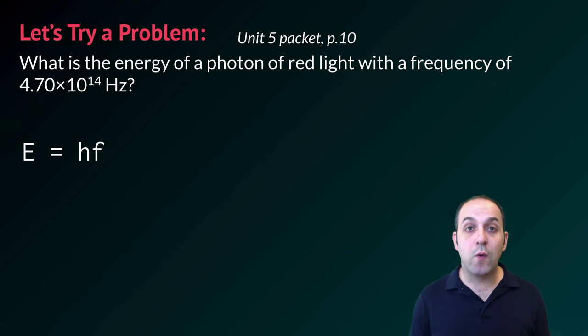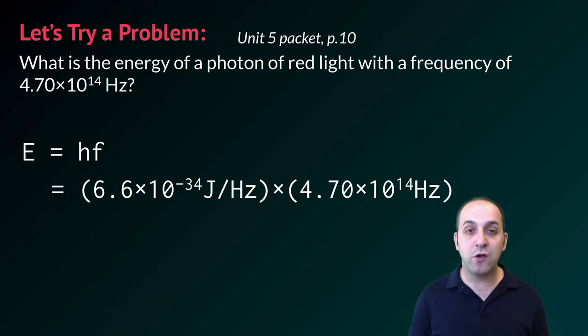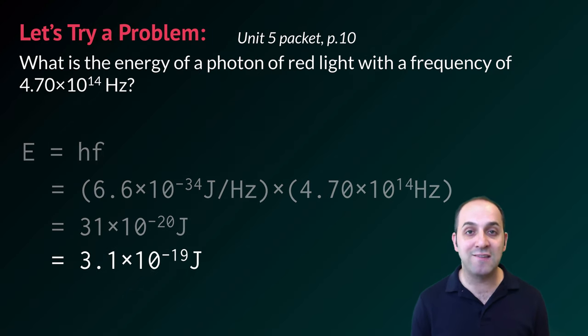So in order to do this, we're going to use the formula that we just discussed, E is equal to H times F. We're going to substitute in our values for H, which of course is constant, and F, which is given to us in the problem. We're going to do that math. We're going to get 31 times 10 to the negative 20 joules. And if we want to put that in scientific notation, that becomes 3.1 times 10 to the negative 19 joules. Does that make sense? If it doesn't, take a moment, write down any questions that you have, and then when you're ready, we can move on.